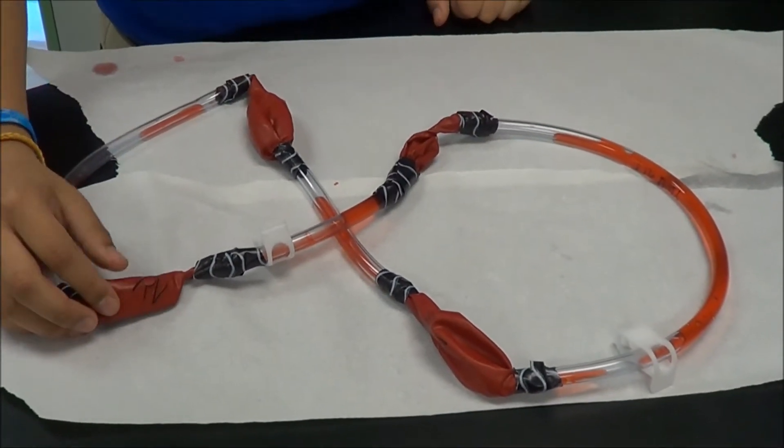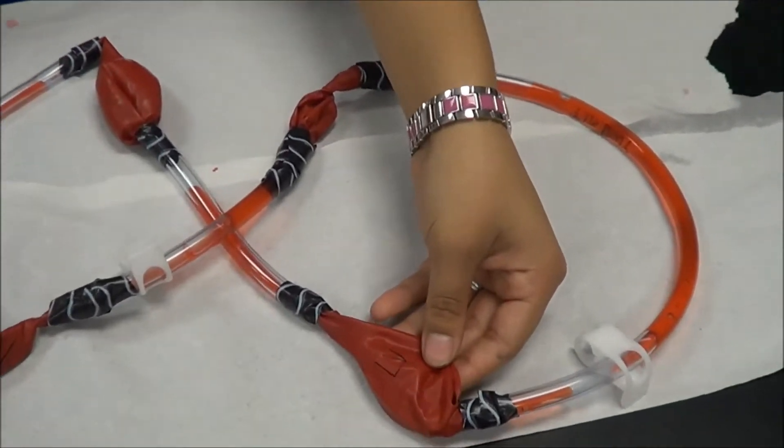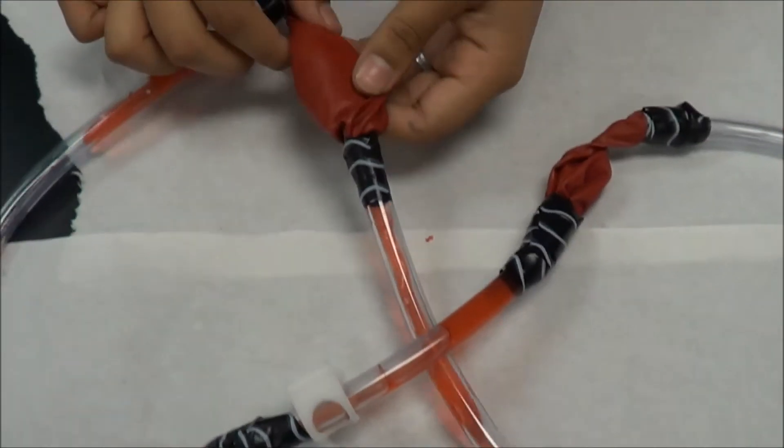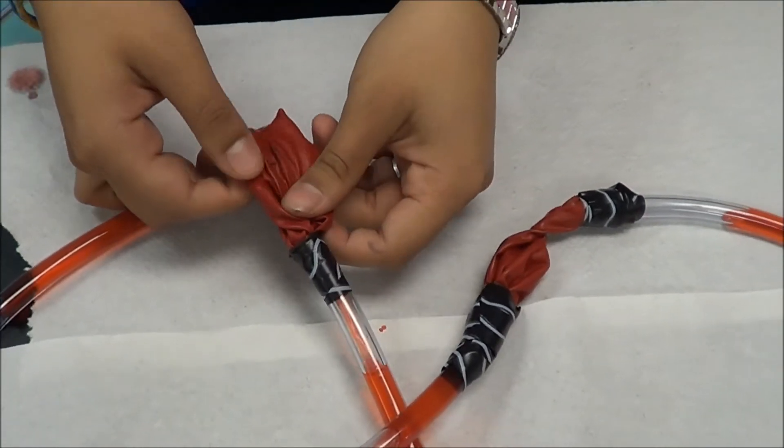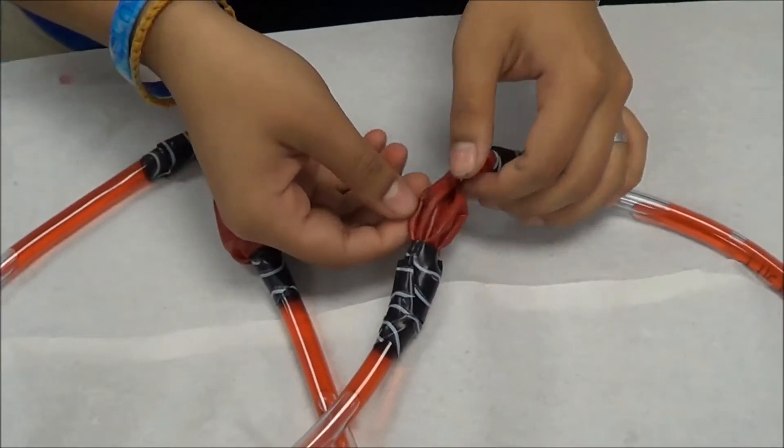This part is the right ventricle, this is the left ventricle, and this is the left atrium and this is the right atrium.